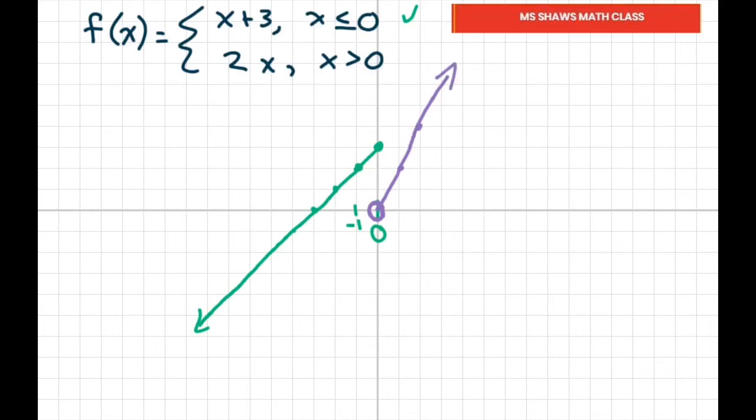Now, this is why the limit, the condition two failed, because at the left, coming from the left here of this side, our limit was at three. But coming from the right, our limit was getting closer to zero. This is called a jump discontinuity because there's a jump going on in here.